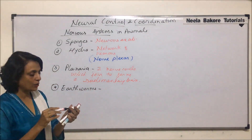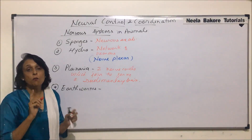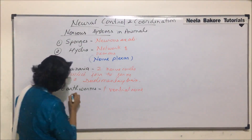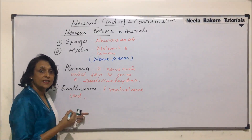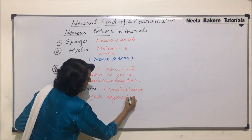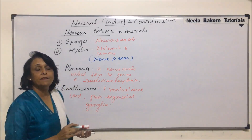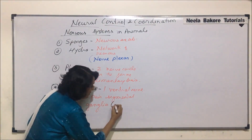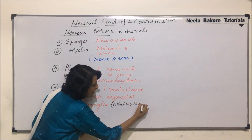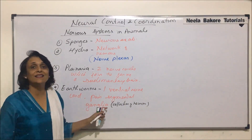The fourth category: earthworms, that is the annelida group. In annelida, or in earthworms specifically, there is one ventral nerve cord and paired segmental ganglia. The term 'ganglia' refers to a collection of neurons — many neurons collected in the form of a mass, and that mass is known as a ganglion.